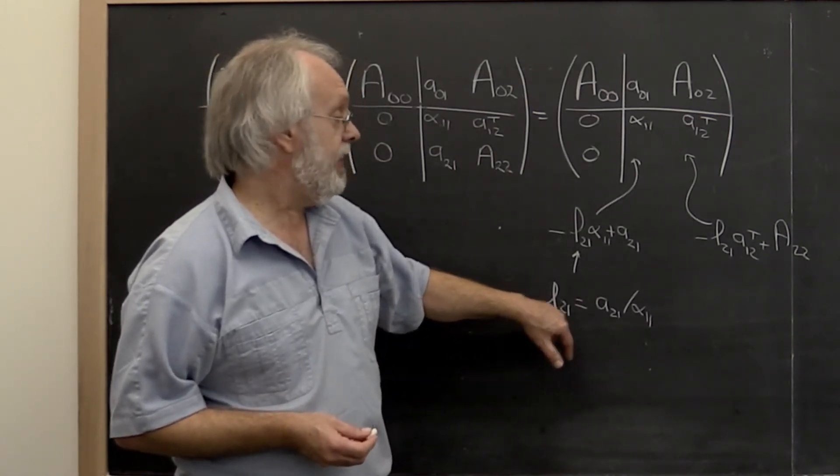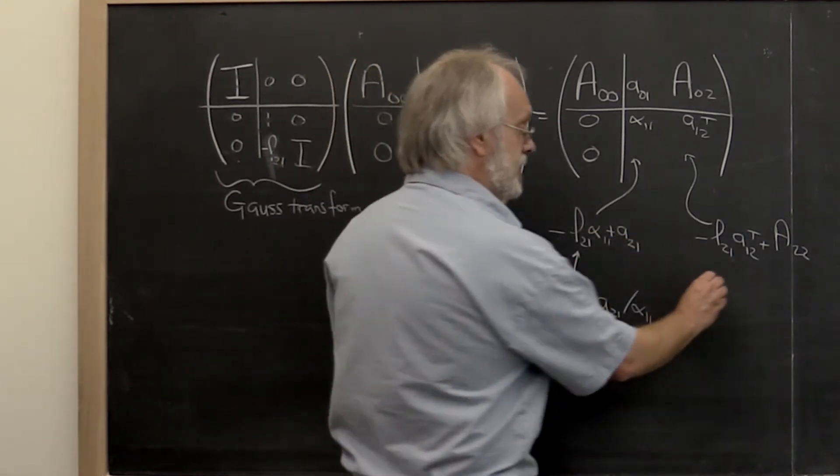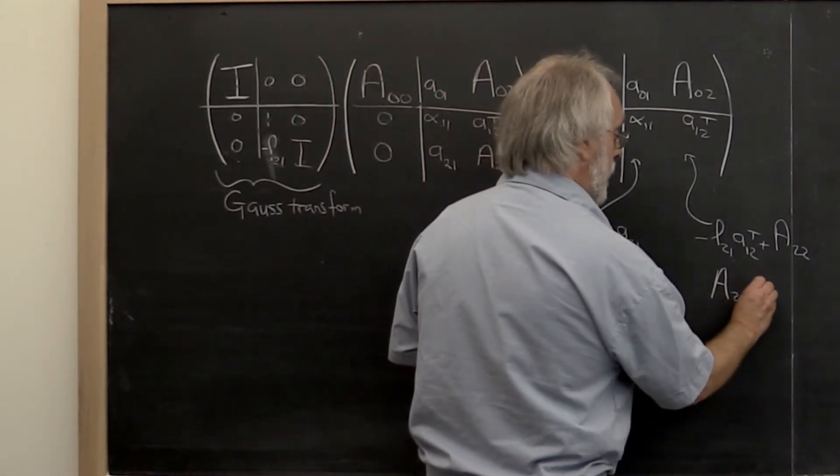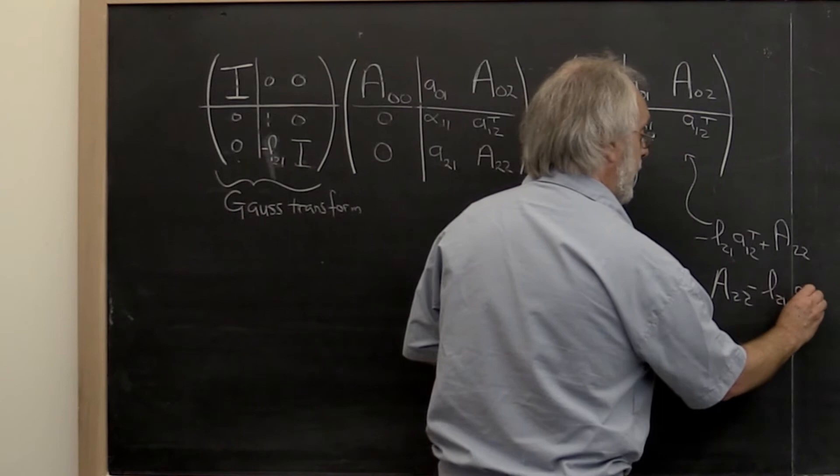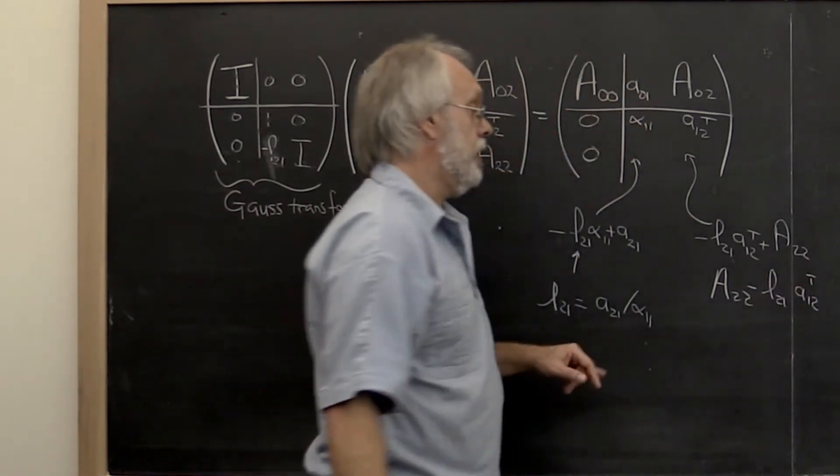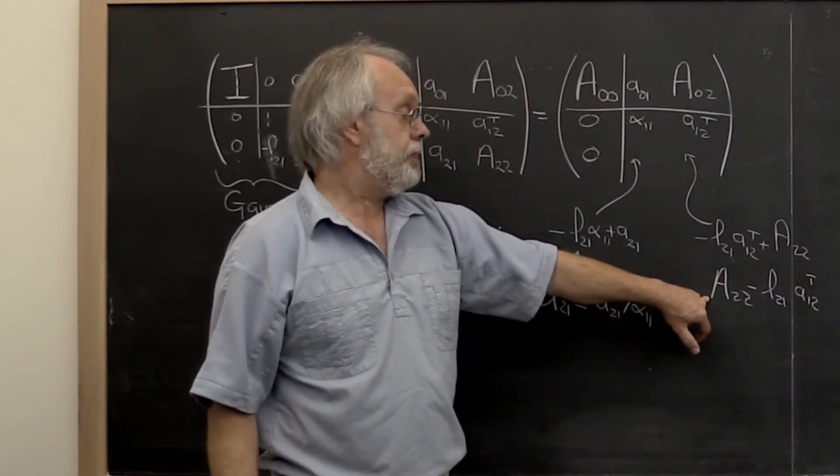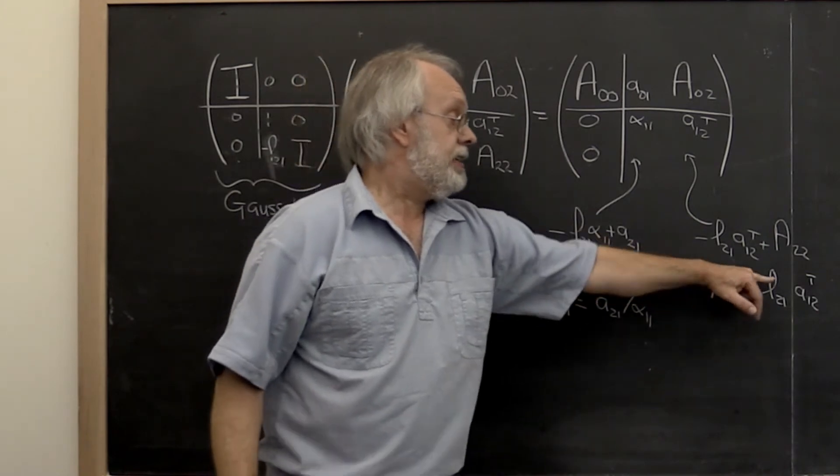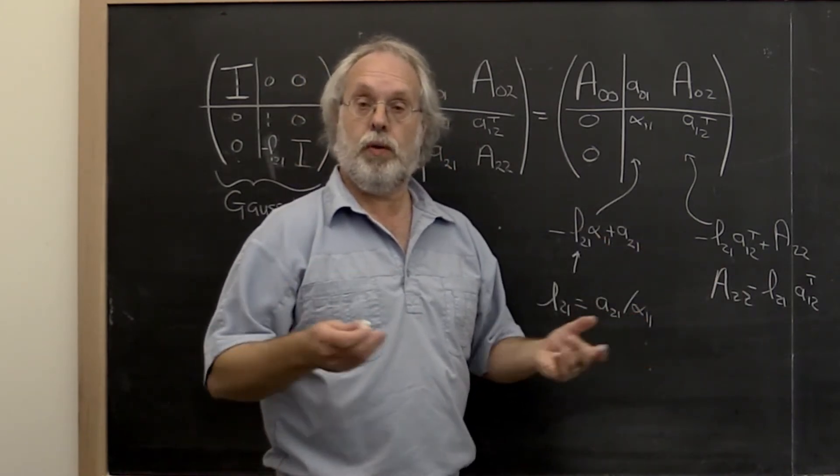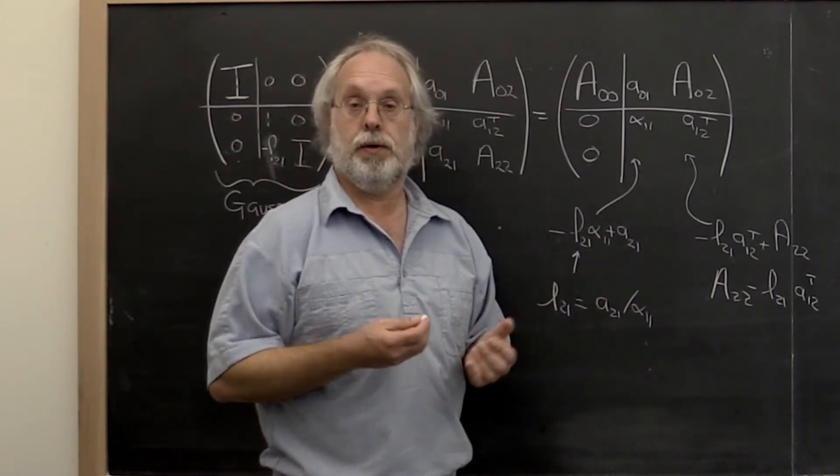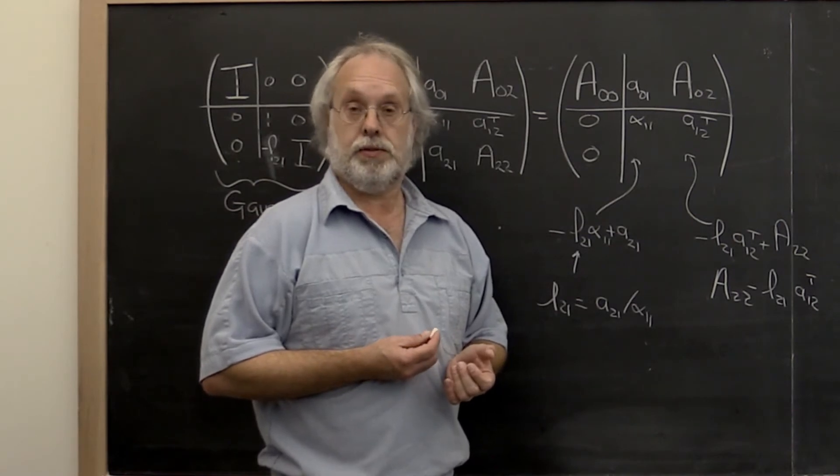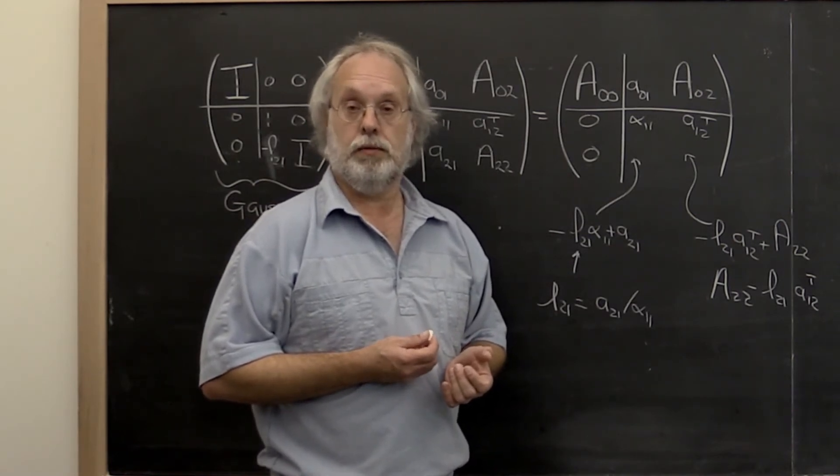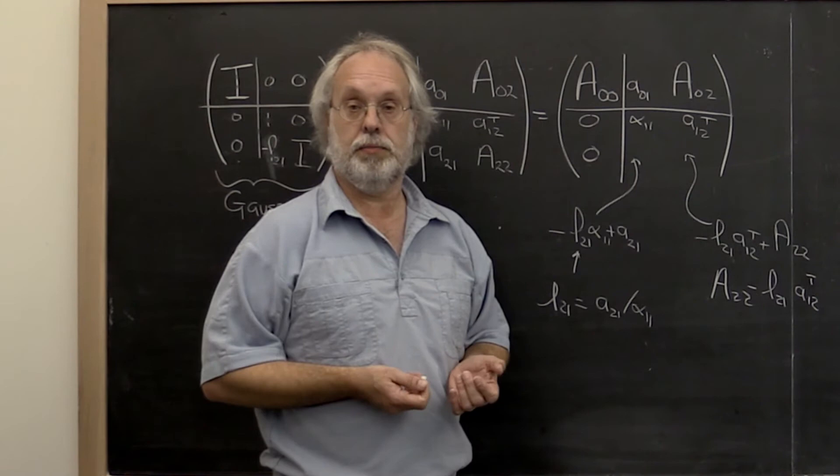And then once you have done that, notice that this is the same as A22 minus L21A12 transpose. And notice that that's exactly the update with the rank 1 update that shows up in our LU factorization algorithm as well, the one that was equivalent to Gaussian elimination.